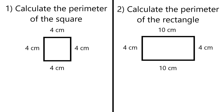Now if you have a rectangle you're going to have two different types of length when it comes to the sides. So we've got four centimeters and 10 centimeters, and the lengths opposite are going to be the same. Those are the rules for the rectangle.